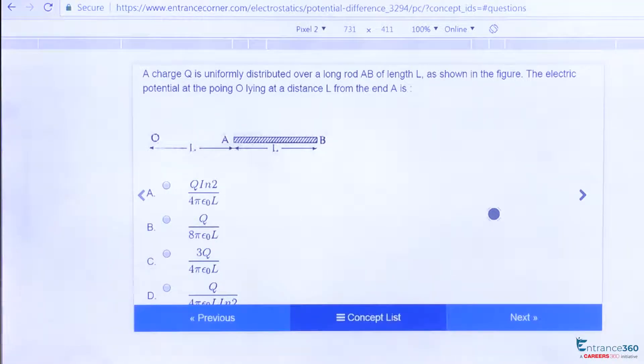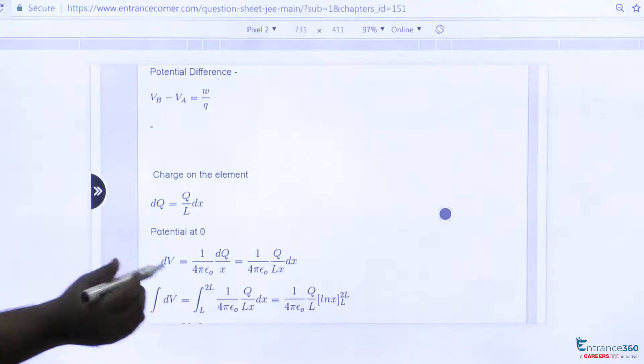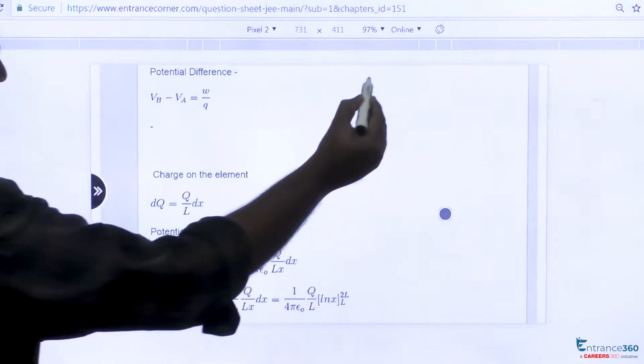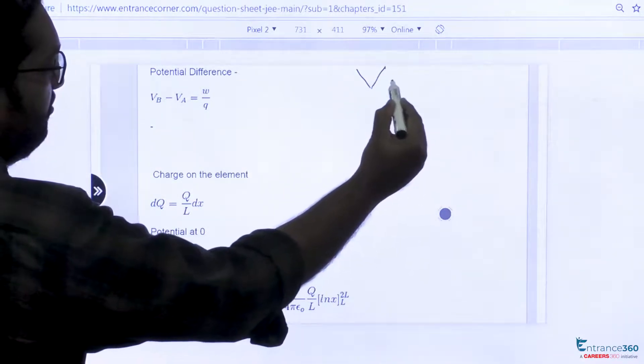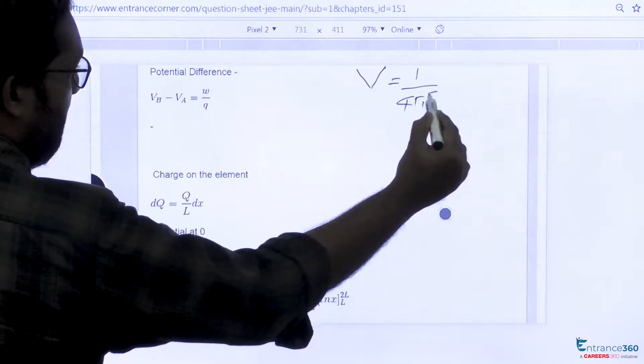From the question itself you will understand the concept that we are using here is potential due to a charge. So potential difference due to a charge, VB minus VA, equals work done by charge. As we already know that potential due to a charge V equals 1 by 4π epsilon zero Q by distance.